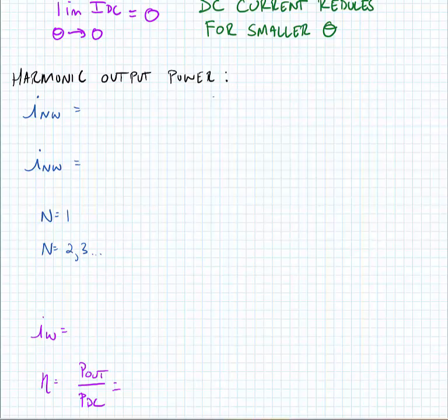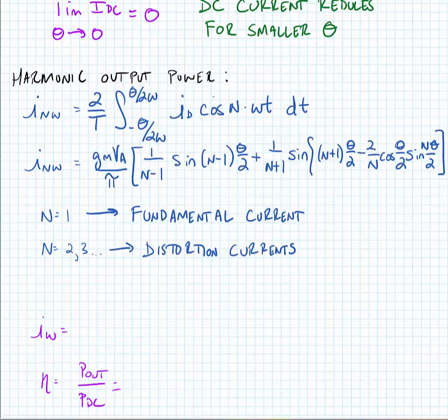We can use similar Fourier analysis to find harmonic output power. We can find the currents at the fundamental and at the multiple other harmonics—the second, third, fourth, fifth harmonic. N equals one is the fundamental current, and N equals anything else is a distortion current.